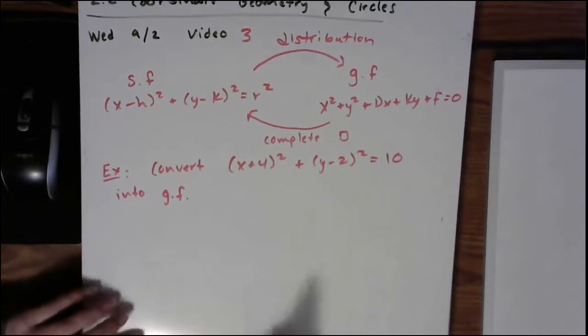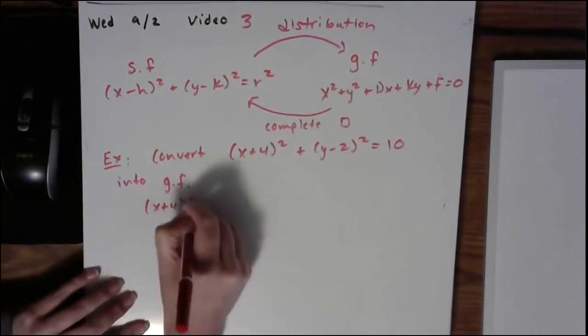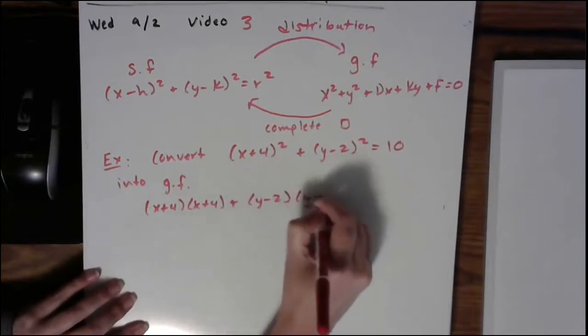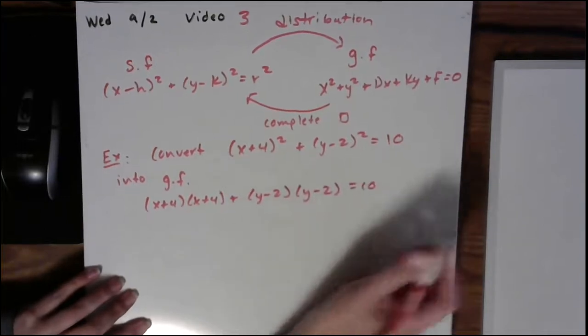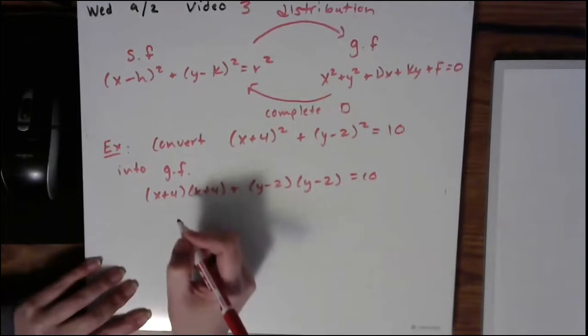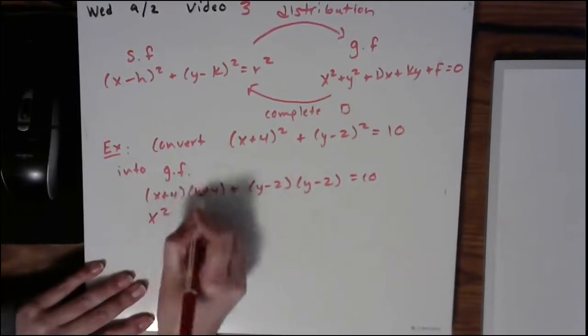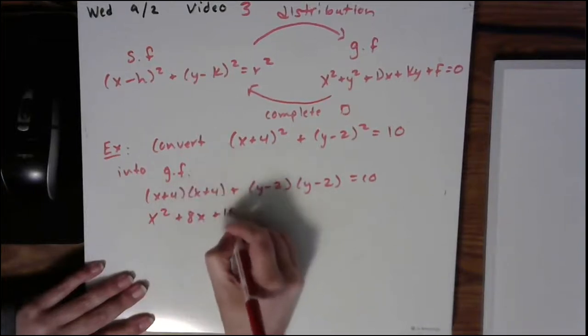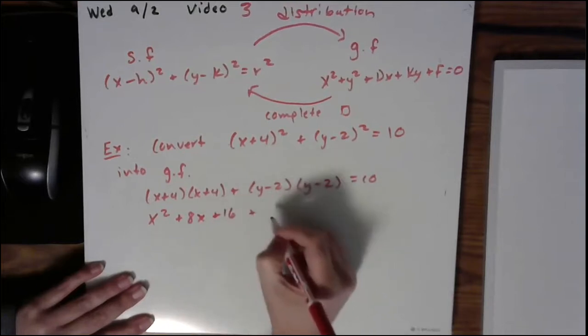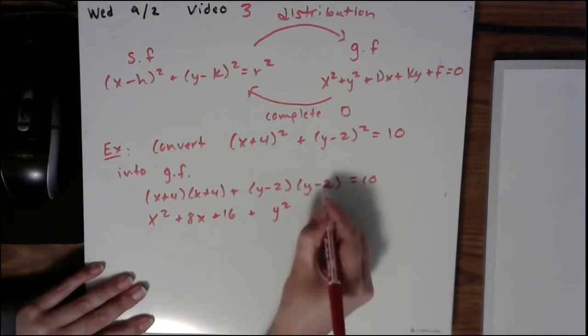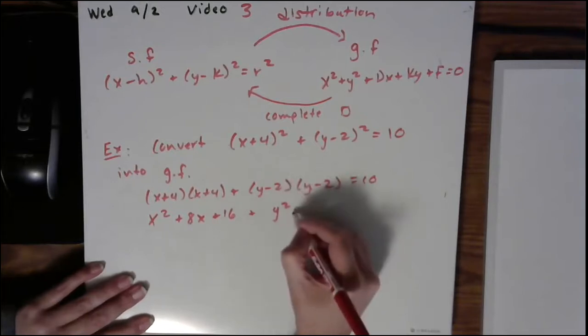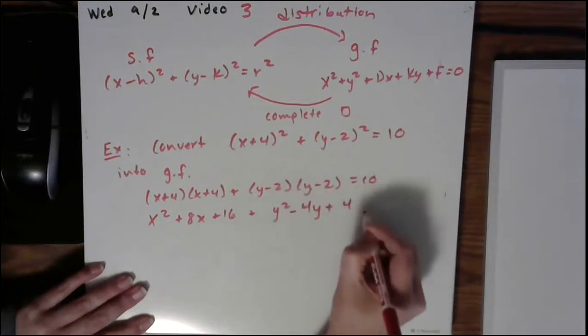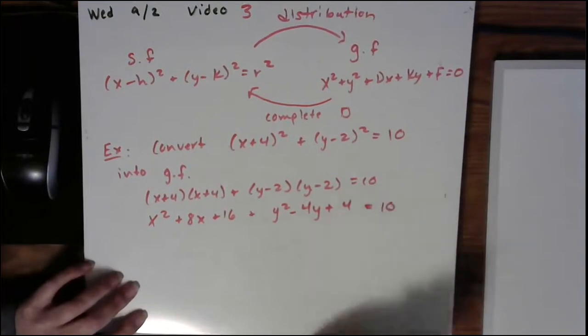So I really do mean just distribute. We have (x + 4)(x + 4) plus (y - 2)(y - 2) equals 10. So then FOIL, that's probably how you learned this in high school. x² + 4x + 4x to give me 8x, plus 16, then plus y² minus 2y minus 2y, give me minus 4y, and then plus 4, equals 10.